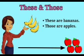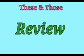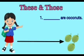Children, I believe now everyone is clear about these and those. Okay now, let's do a quick review. Number one, dash are coconuts. Children, are the coconuts near or far away? Yes, it's far away, so what shall we use? That's right. Those are coconuts.